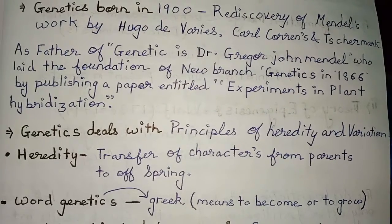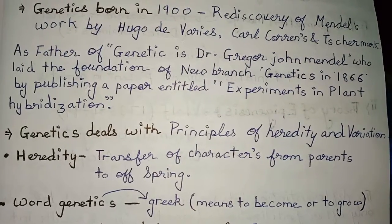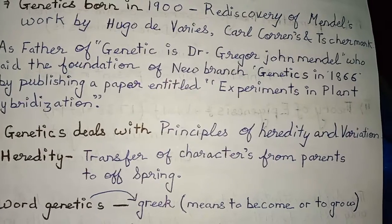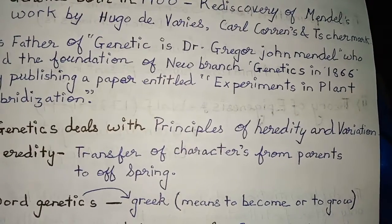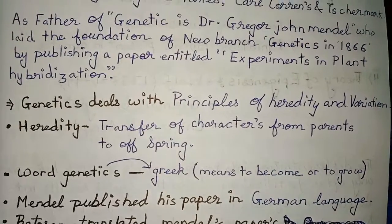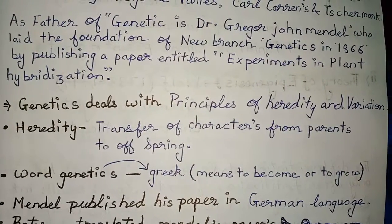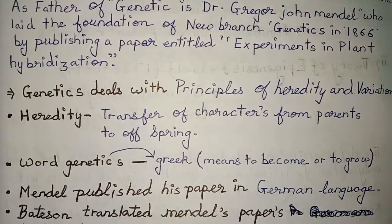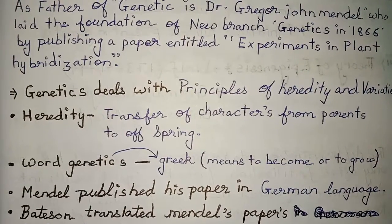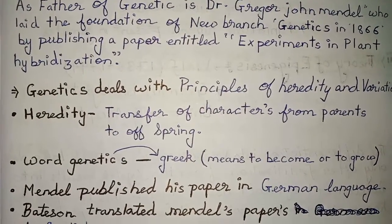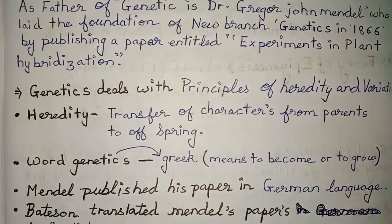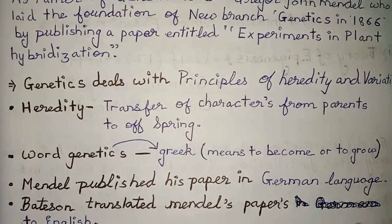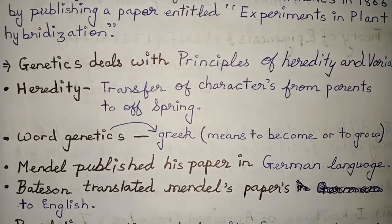If you want to become a genetic engineer or scientist, you can become or grow. Mendel published his paper in the German language. Then Bateson, who coined the term 'genetics,' translated Mendel's paper into English.